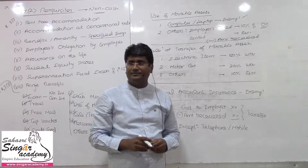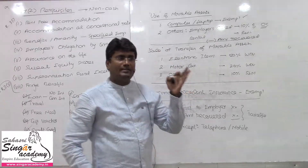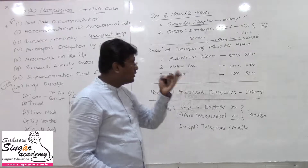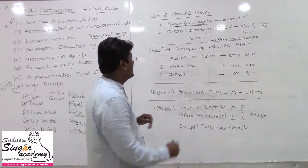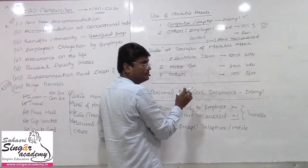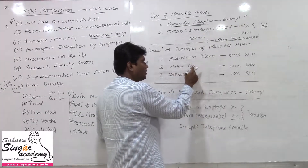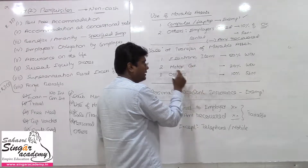For sale or transfer of mobile assets, there are three categories: one is electronic items, second is motor car, and third is other cases.